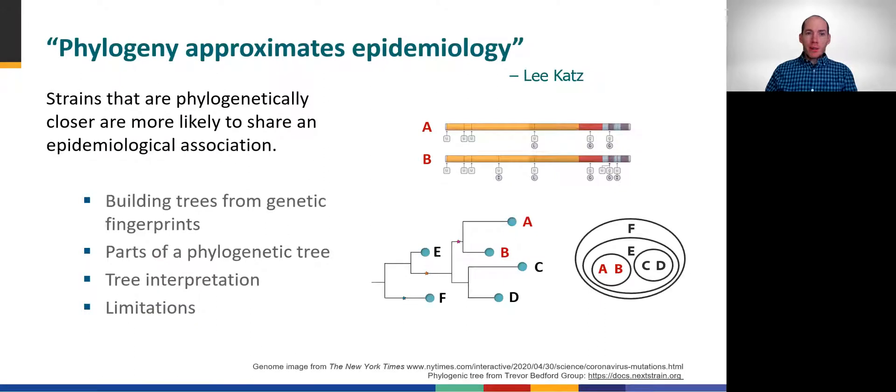We will be going in depth on this topic because a key underlying assumption of genomic epidemiology is that strains that are phylogenetically closer are more likely to share an epidemiological association. In this module, we will talk about four key aspects of this approach: a simple description of how trees are constructed from genetic fingerprints, the different parts of a phylogenetic tree, basics of tree interpretation, and finally some limitations.